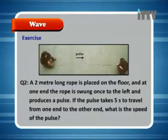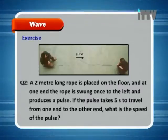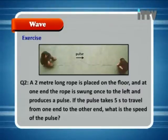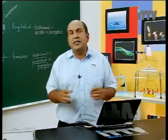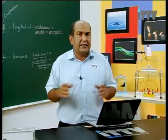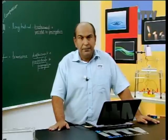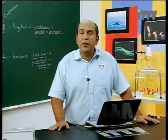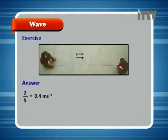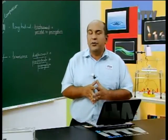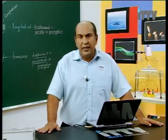Let's try another exercise. A two-meter long rope is placed on the floor, and at one end the rope is swung once to the left and produces a pulse. If the pulse takes five seconds to travel from one end to the other, what is the speed of the pulse? We use the formula for speed: distance over time. The rope is two meters and the time taken is five seconds. So speed equals two over five, which equals 0.4 meters per second. If you are given values like frequency and lambda, then you would use the formula v = f × lambda.